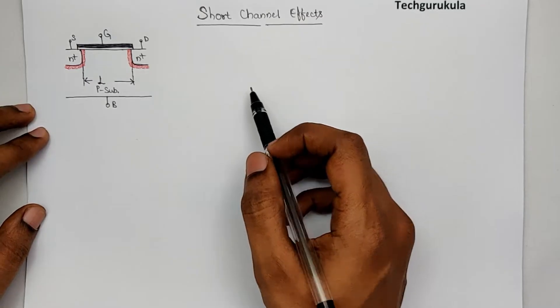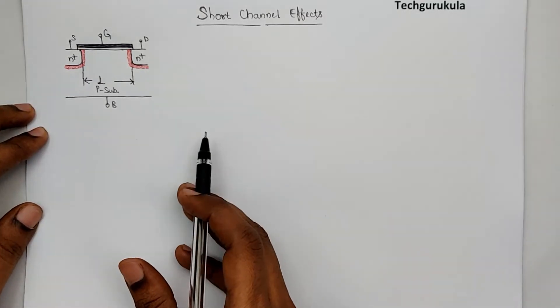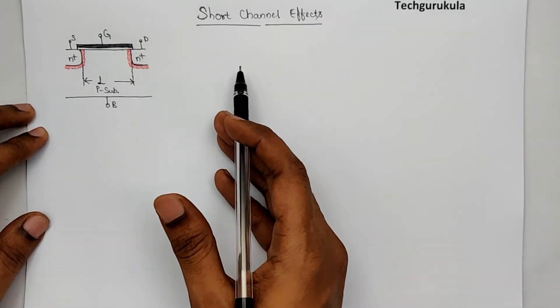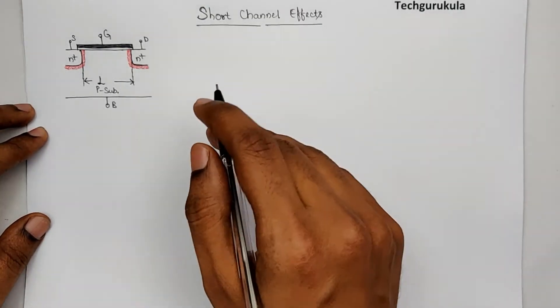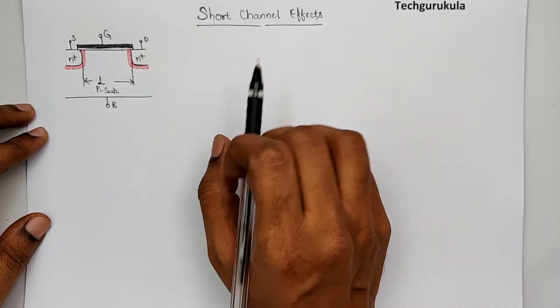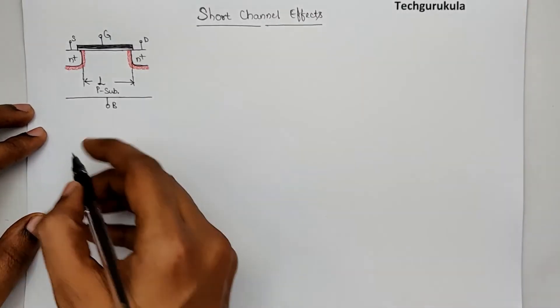Which means we are reducing channel length to get to a point where the channel length is called short. So, first of all, before talking about short channel, we will see the motivation behind reducing the channel length to make it short channel. And then define what do I mean by short channel?